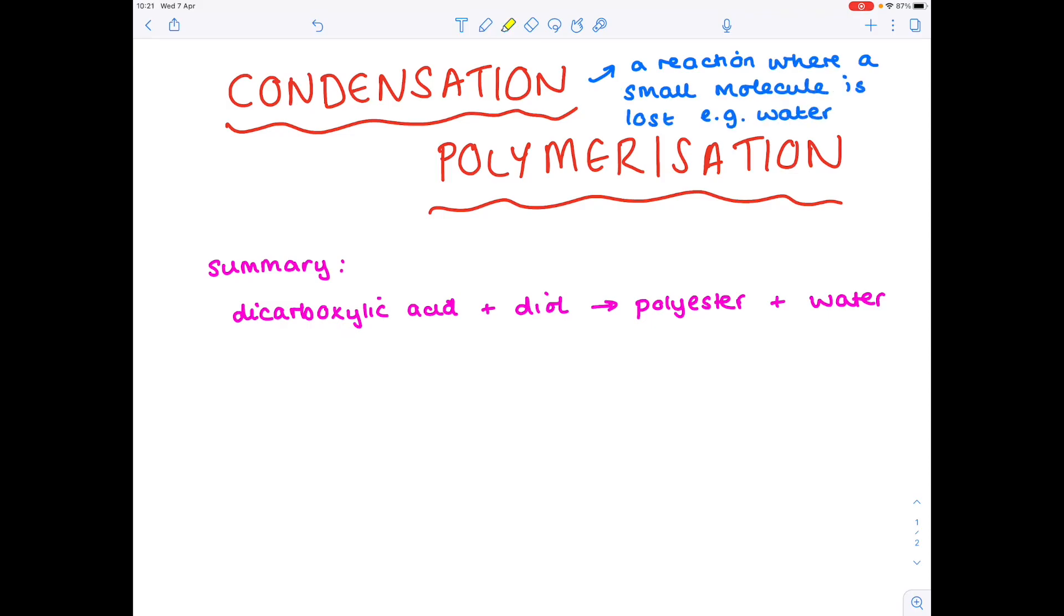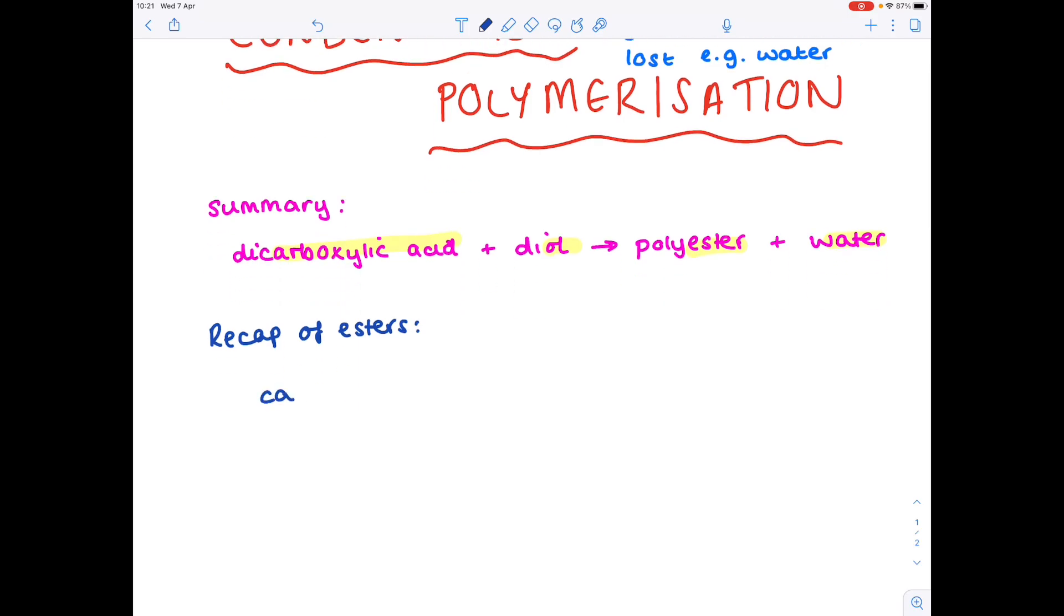Now if we look more closely at this summary equation, where have we seen a carboxylic acid and alcohol and water being made before? Well it was when we were looking at making esters. So just to recap esters. Remember in order to produce an ester we needed a carboxylic acid, we needed an alcohol. It was a reversible reaction which produced an ester and water as a by-product.